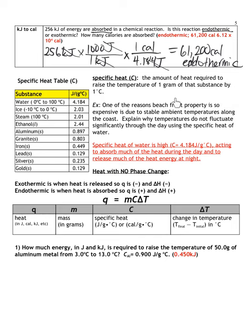Specific heat, or specific heat capacity, is the amount of heat required to raise the temperature of 1 gram of a substance by 1 degree Celsius. Gold, silver, lead, and iron all have low heat capacity, meaning they don't require much energy to raise 1 gram by 1°C. Water, however, has one of the highest specific heat capacities. Liquid water's capacity differs from ice and steam, which each have their own values.